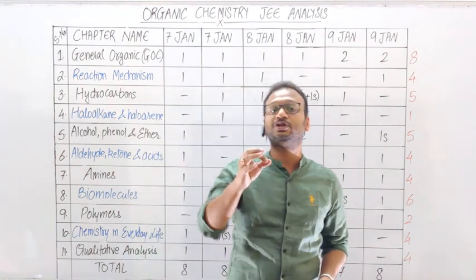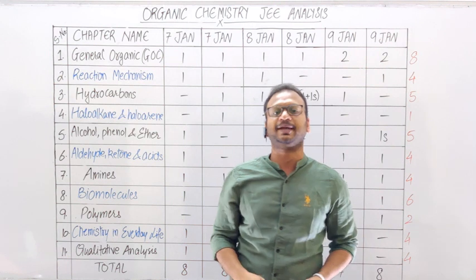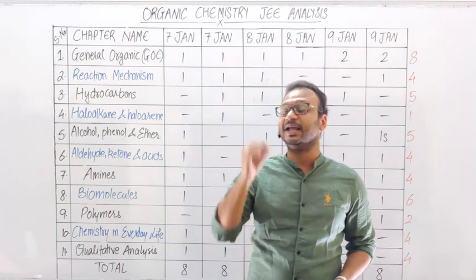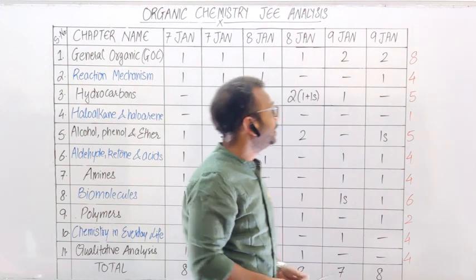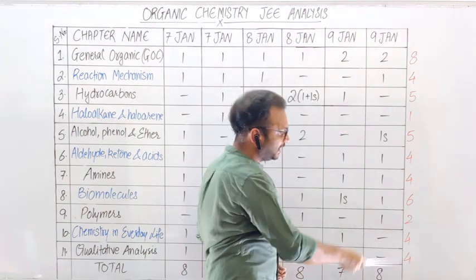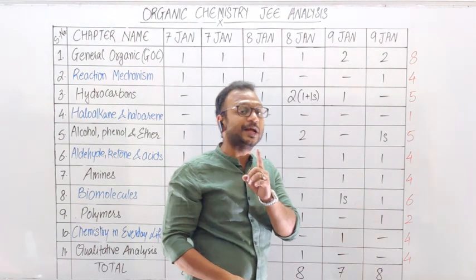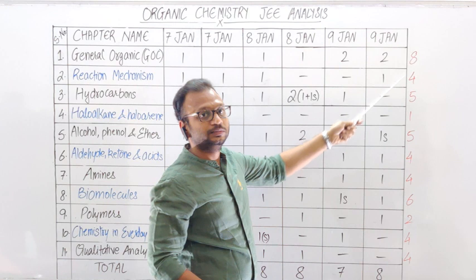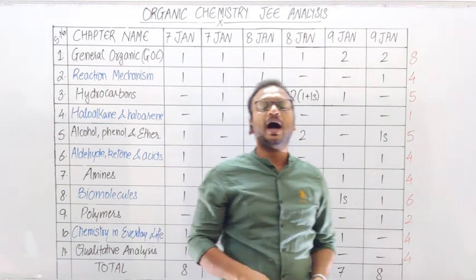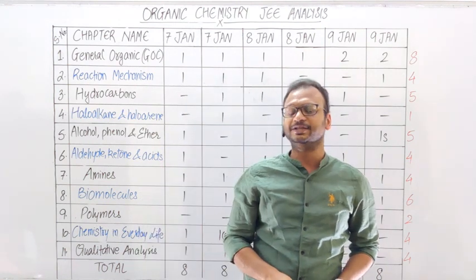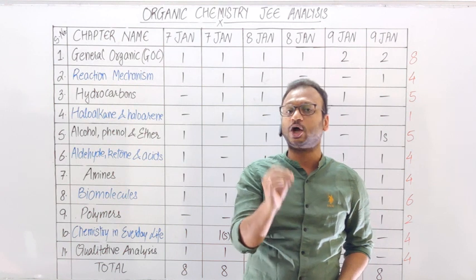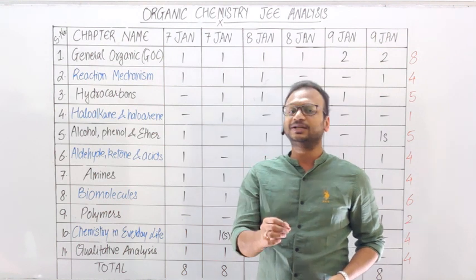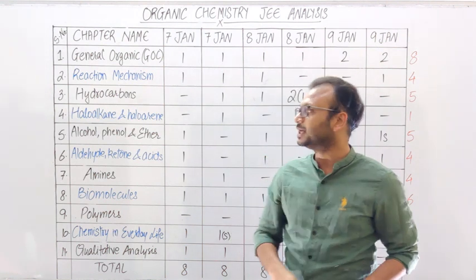यानि GOC में से minimum 1 question तो आना ही आना है। Carbocations, उनकी stability के बारे में, इन सब चीजों को बहुत ध्यान से पढ़िएगा। क्यूंकि सबसे ज़्यादा वेटेज GOC का है। ये भी हो सकता है कि उसमें से 2 questions आ जाएं।